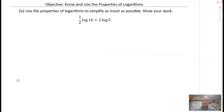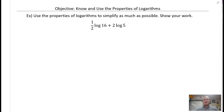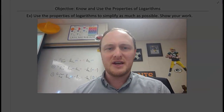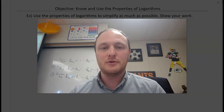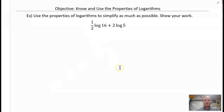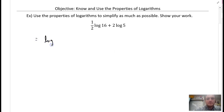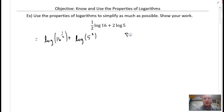Here is the first example: use the properties of logarithms to simplify as much as possible, show your work. I want to direct your attention to the order up here — step one: use the power property first. So I'm going to move any coefficients up into the exponent. That gives us log of 16 to the power of one-half plus log of 5 to the power of 2. All I did was take those coefficients and move them up — that is the power property of logarithms.